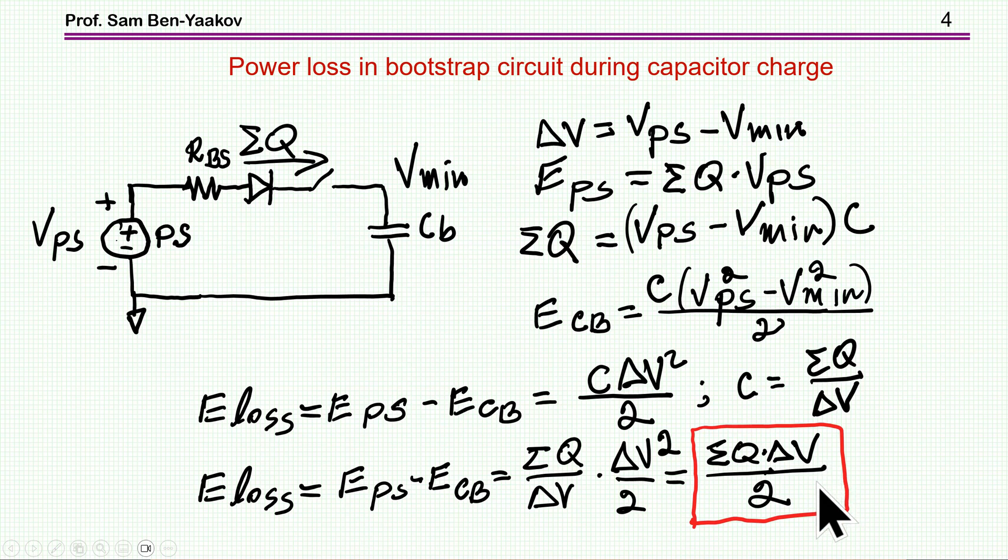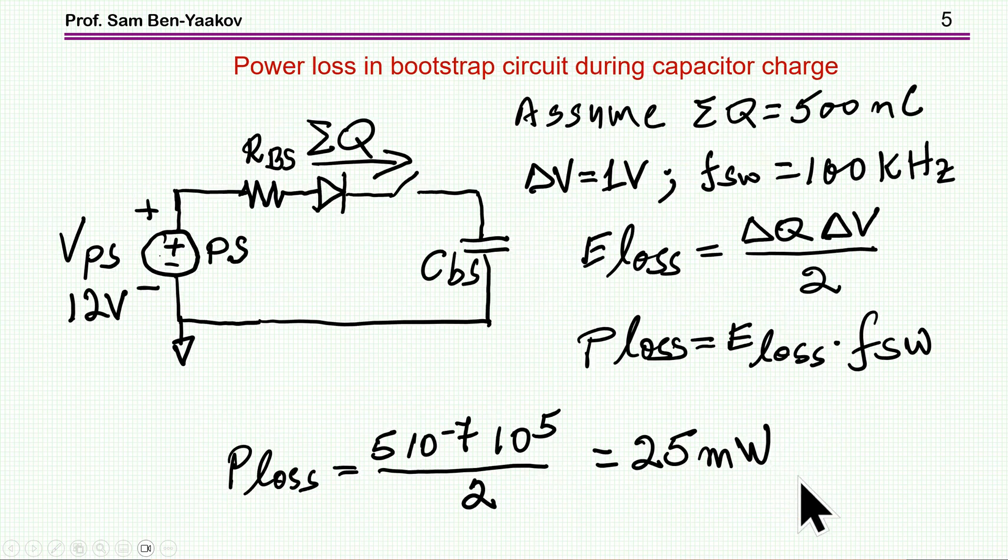How much energy is actually lost? Let's put some numbers here. Let's assume I have five transistors, and the total charge is 500 nanocoulombs. This will include also the charge for the driver itself. Assuming delta V of one volt and a switching frequency of 180 kilohertz, and using this expression, the power loss is this energy times the switching frequency. Plugging in the numbers here, delta Q is 5*10^-7, and this is 10^5. I'm getting 25 milliwatts.